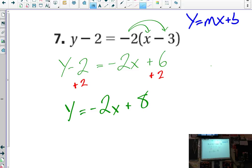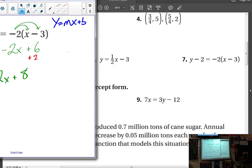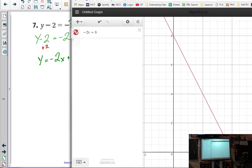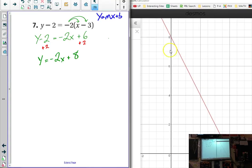So, negative 2x plus 8. Can anyone relate this graph with what we originally started with? And my computer won't split screen since there's a screen on the right here that it can go to. But this graph right here. So, what we started in was called point slope.